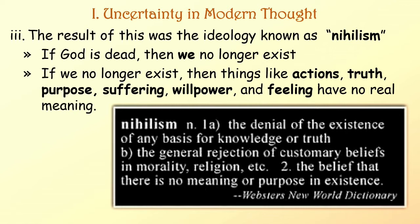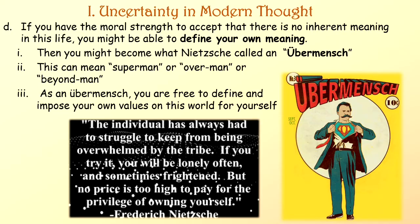If God is dead, then we no longer exist. And if we no longer exist, then things like actions, truth, purpose, suffering, willpower, and feeling have no real meaning. If you have the moral strength to accept that there is no inherent meaning in this life, you might be able to define your own meaning — and then you might become what Nietzsche called an Übermensch, which can mean Superman, Overman, or Beyondman. As an Übermensch, you're free to define and impose your own values on this world for yourself.